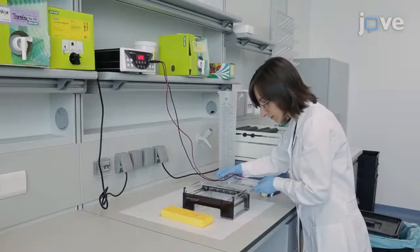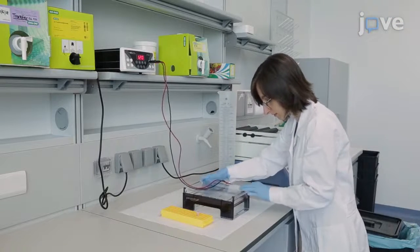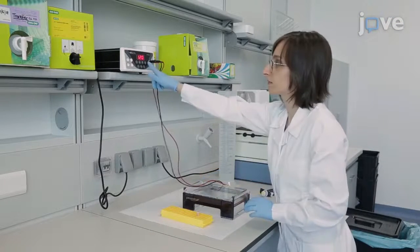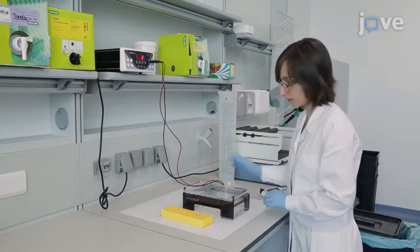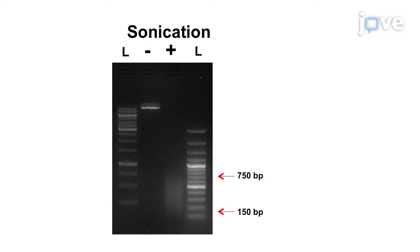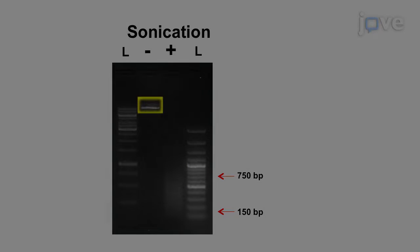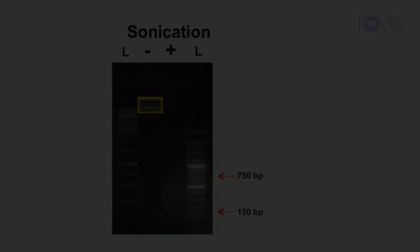Then start the electrophoresis unit at 5 volts per centimeter for 15 minutes. The agarose gel electrophoresis shows the presence of a DNA smear confirming sonication, in comparison to the solid band obtained from unsonicated DNA.